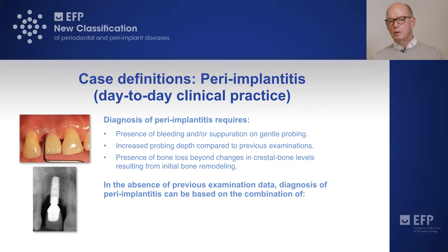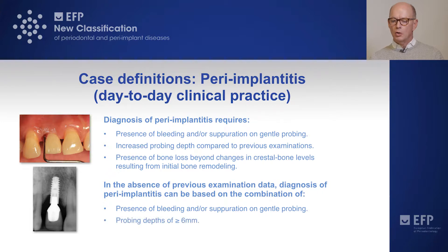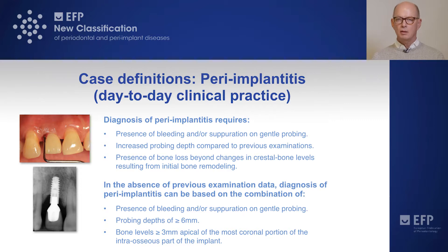How do we perform a diagnosis in day-to-day clinical practice in the absence of previous examination data? In those cases, we still need to assess bleeding or suppuration on probing. We are documenting probing depths of 6 mm and more, together with a bone level located at least 3 mm apical of the most coronal portion of the intraosseous part of the implant. These features together will be in harmony with the diagnosis of peri-implantitis.